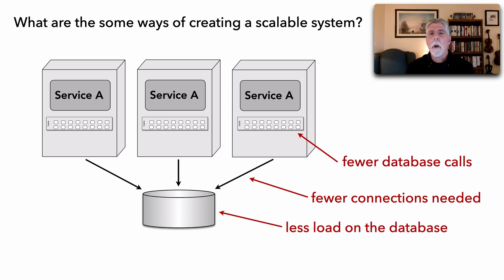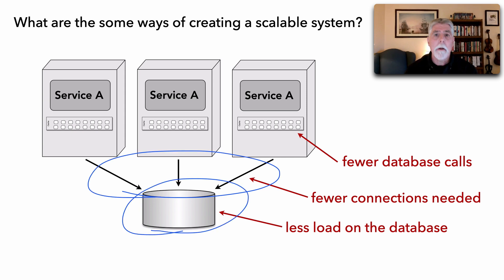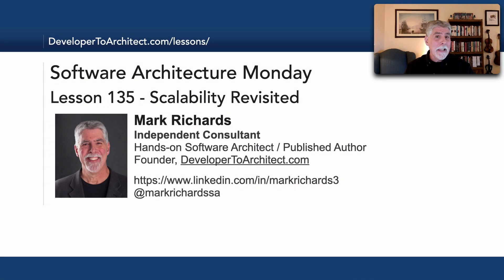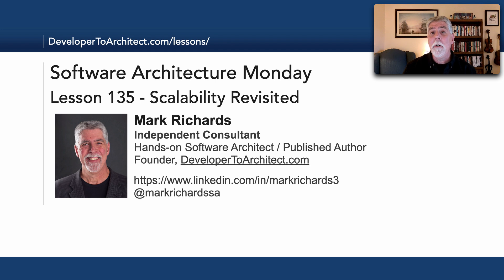A lot of times we're going to a third-party service — are we limited in the number of connections we may have to that database or third-party? The horsepower and throughput of the database, or whatever broker we happen to be using — these are all the constraints to look for when creating highly scalable systems. This has been lesson number 135, Scalability Revisited, our third lesson in Software Architecture Monday about scalability. It comes up quite a bit because scalability is one of those seemingly important architecture characteristics in most systems. Thank you so much for listening. Stay tuned in two more Mondays for the next lesson.